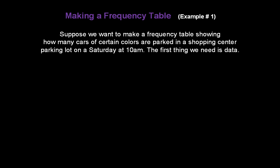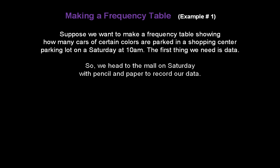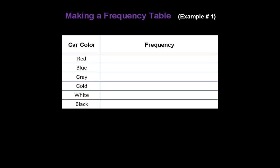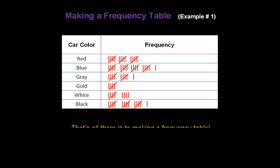Suppose we want to make a frequency table showing how many cars of certain colors are parked in a shopping center parking lot on a Saturday at 10 a.m. The first thing we need is data. So we grab a pencil and paper and head to the mall on Saturday morning to record our data. We start walking around the parking lot — the first thing we see is a red car, then a blue car, then a white car, another white car, yet a third white car — and we keep counting until we've counted all the cars. And now we have a frequency table. That's all there is to making a frequency table.